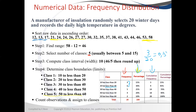For example, if I want to know how many days the temperature was less than 50, I add up all the cumulative values going up to that class. So it means you're adding all of them — there will be 18 days where the temperature was less than 50. And that is how you use the frequency table along with the cumulative frequency.